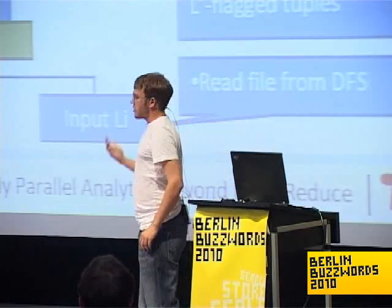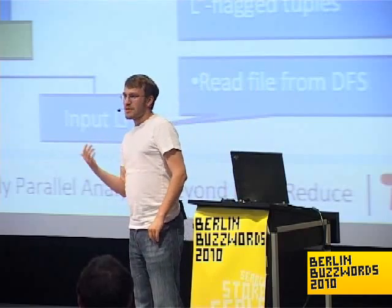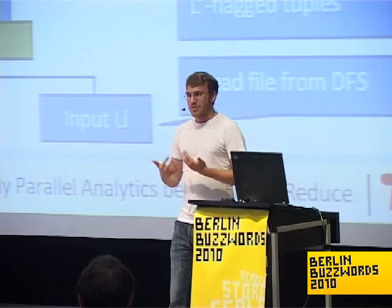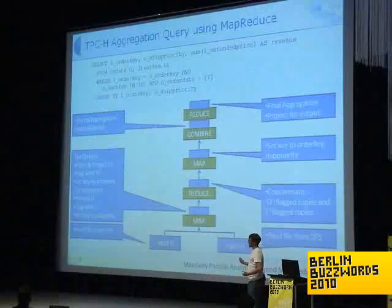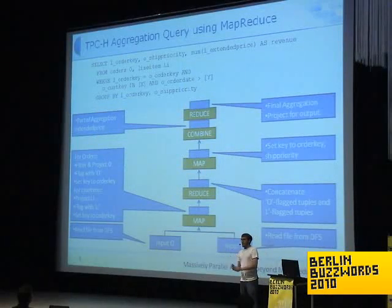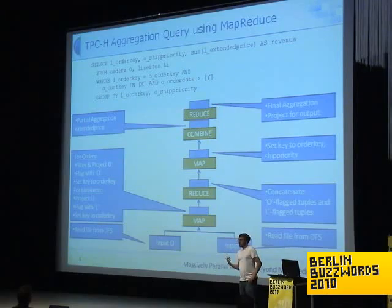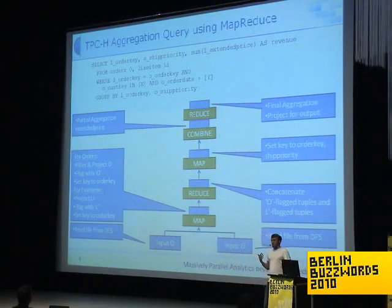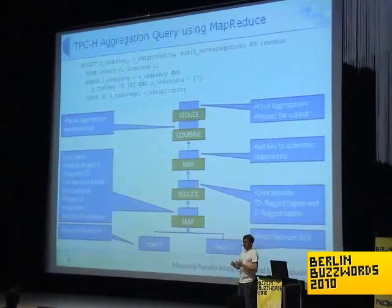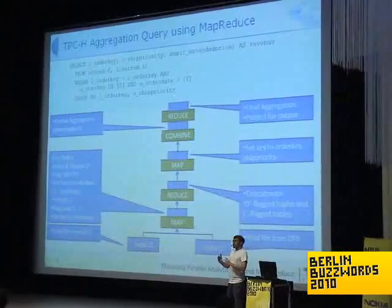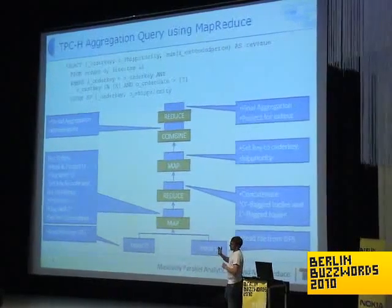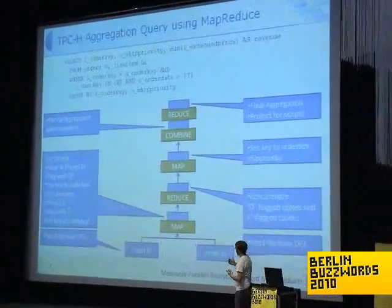For motivation, here is a SQL query. Although one of the buzzwords is NoSQL, here's a SQL query that is pretty simple. We have two tables, we join them, and finally do an aggregation on the joined result. Trying to execute that using MapReduce — one possibility — would result in using two MapReduce jobs: the first job doing the join and the second doing the grouping and aggregation.